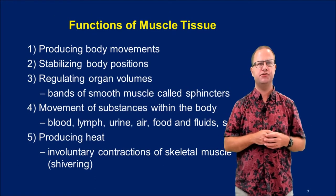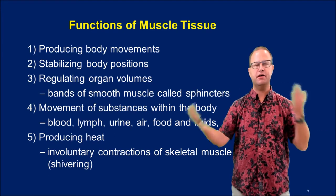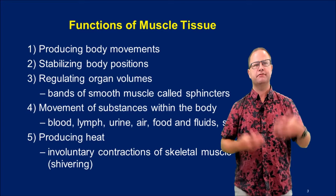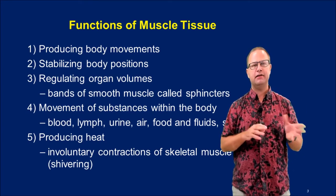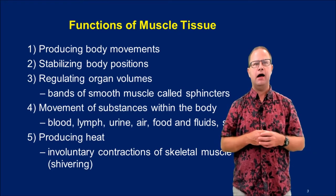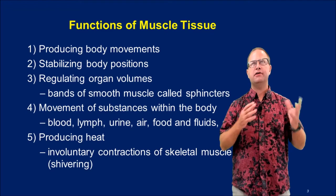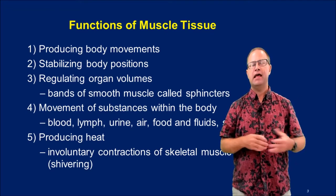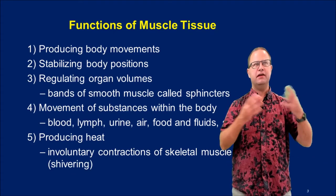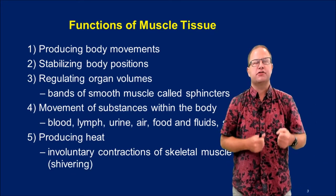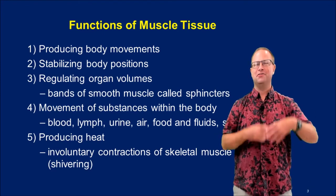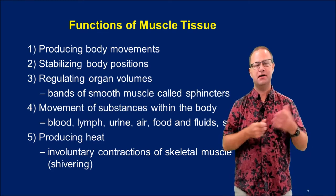Let's talk about some of the functions of muscle tissue. Skeletal muscle is there to produce body movements and also helps to stabilize body positions and keep us upright. Smooth muscle helps to regulate organ volumes and moves food through the digestive tract. Muscle tissue is also important for producing heat — skeletal muscle contraction generates a fair amount of heat. If you're too cold, you'll start to shiver, and that shivering generates heat. Simply going to the gym and working out generates a lot of heat as well.